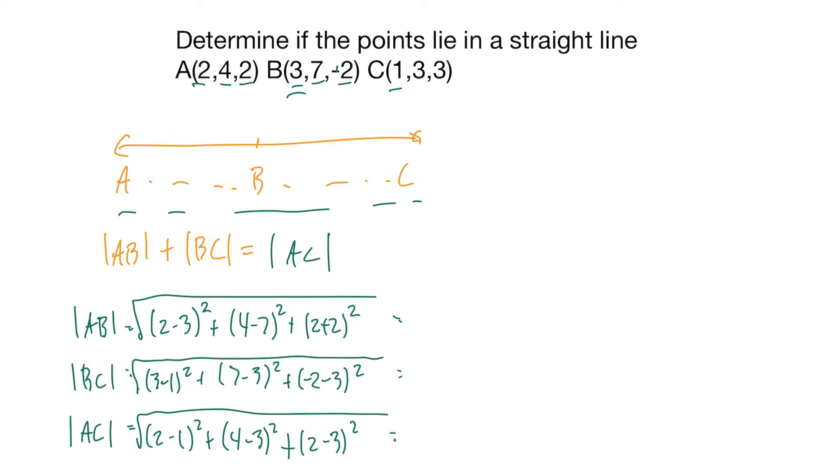So this will give you negative 1 squared plus negative 3 squared plus 4 squared, and 2 squared plus 2 minus 4 squared plus 2 minus 5 squared, plus 1 squared plus 1 squared plus 1 squared.